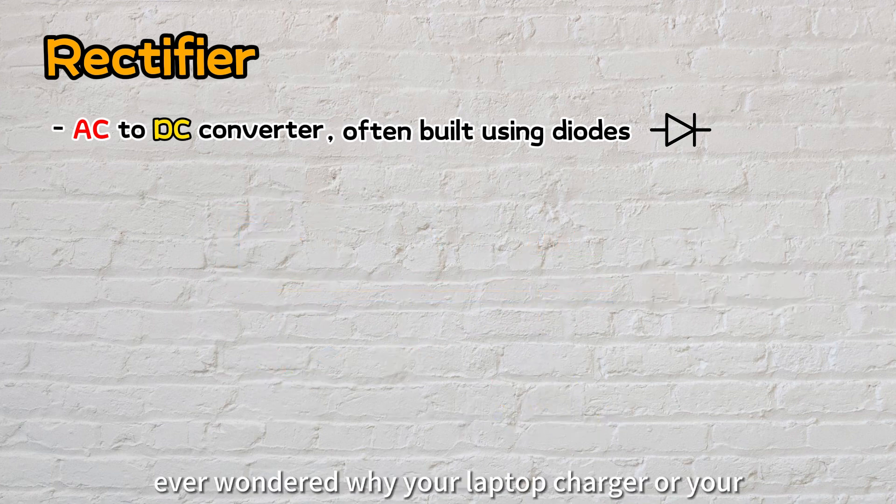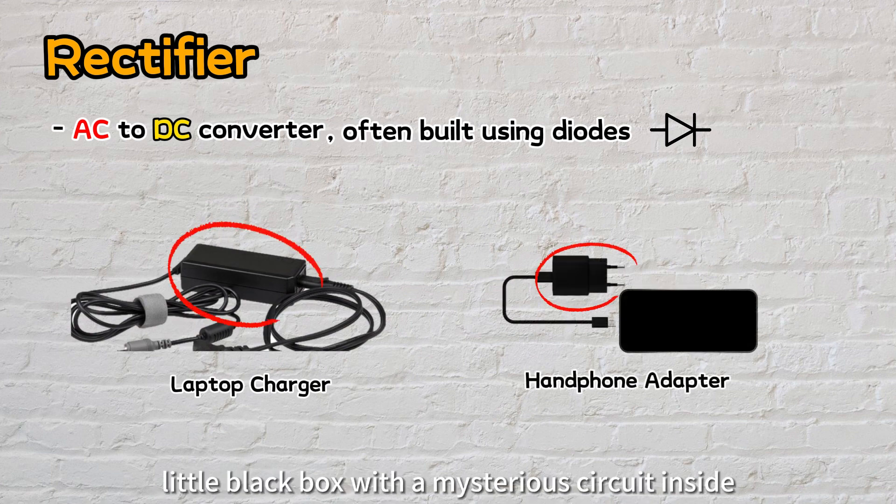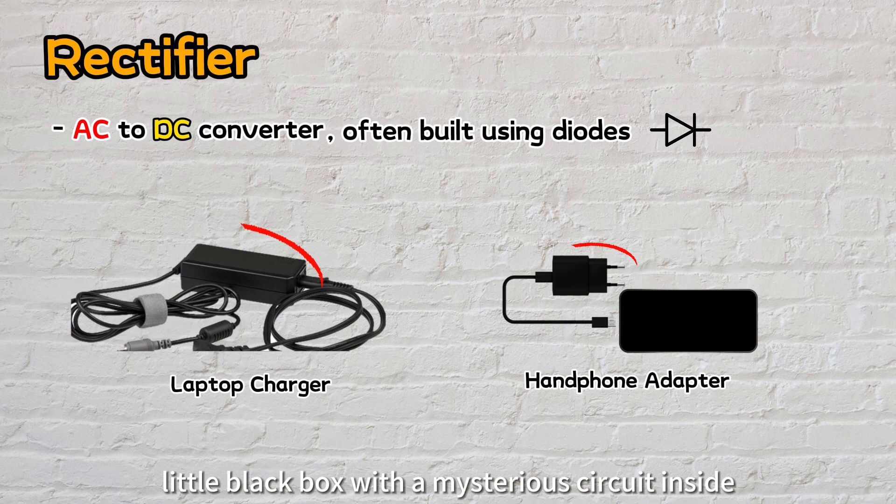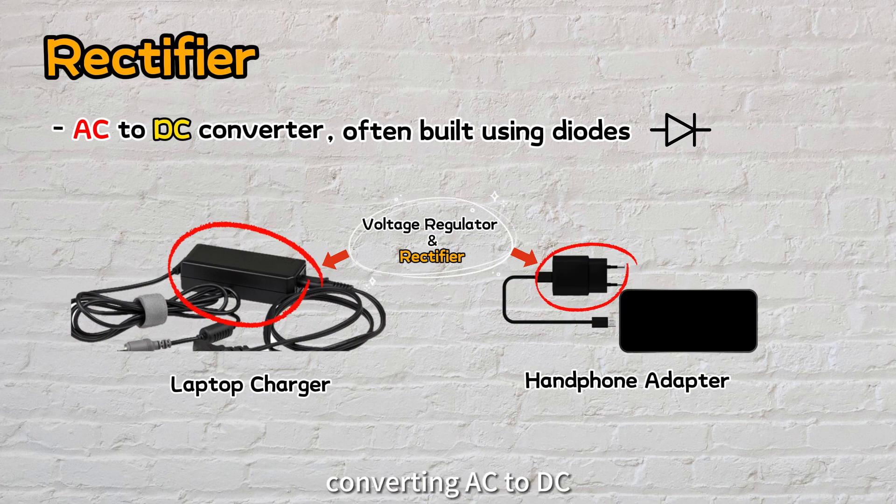So, if you've ever wondered why your laptop charger or smartphone adapter has a little black box with a mysterious circuit inside, that's where our hero, the rectifier as part of voltage regulation system comes into play, converting AC to DC.